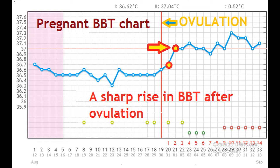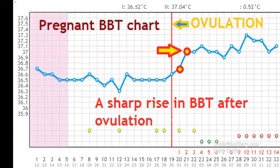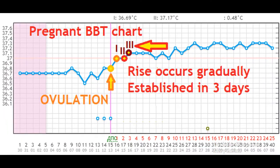The natural and proper difference is 0.3 to 0.5 degrees Celsius or 0.54 to 0.9 degrees Fahrenheit. Here you can see a real example of a chart where the basal body temperature had risen sharply and established within the luteal phase in three days. Here is also a chart with a gradual increase in BBT, where the rise occurs gradually.